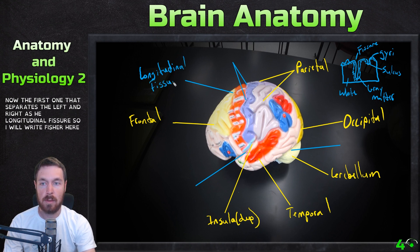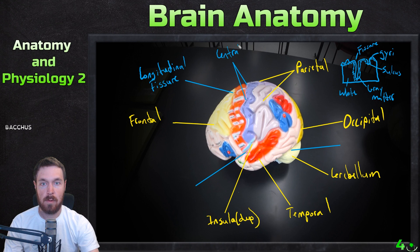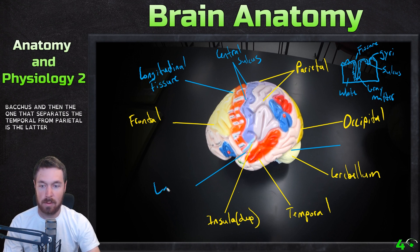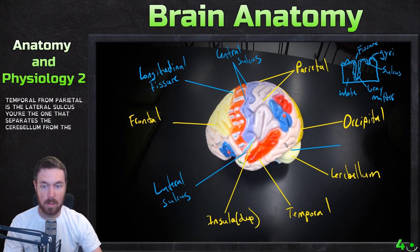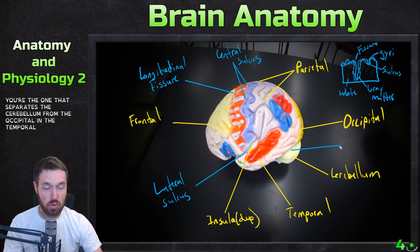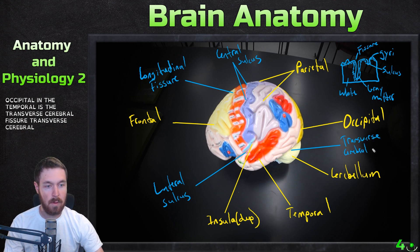The first one, separating left and right hemispheres, is the longitudinal fissure. The one separating the frontal from the parietal lobe is the central sulcus. The one separating the temporal from the parietal is the lateral sulcus. And back here, the one separating the cerebellum from the occipital and temporal lobes is the transverse cerebral fissure.